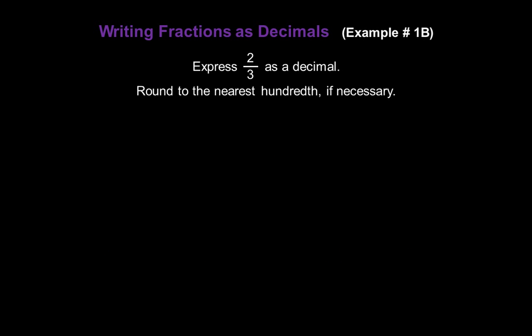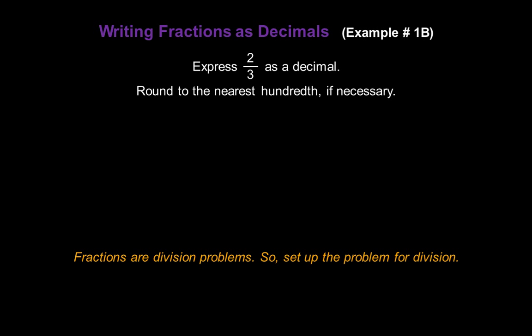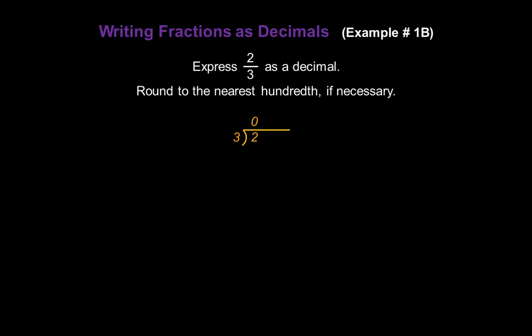Let's do another one. Let's express 2 thirds as a decimal, again rounding to the nearest hundredth if necessary. Since fractions are division problems, we'll set up 2 divided by 3. 3 does not go into 2, so we put a 0 above the 2, place a decimal point after the 2 and after the 0 in our answer. Add a 0 after the 2. How many times does 3 go into 20? 6 times. 3 times 6 is 18, so we subtract 18 from 20, giving a remainder of 2. I want to keep dividing, so I'll add another 0 after the 2.